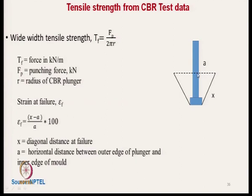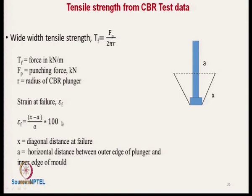The initial length A is the difference between the diameter of the plunger and the base material. X is the horizontal distance between the outer edge of the plunger and the inner edge of the mould. When the plunger moves down, length A is extended to X, so strain percent equals (X − A) divided by initial length A, expressed as a percentage. From the CBR test we can thus measure both tensile strength and tensile elongation.